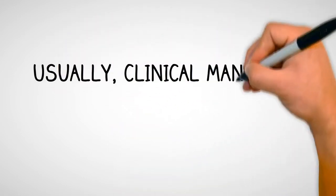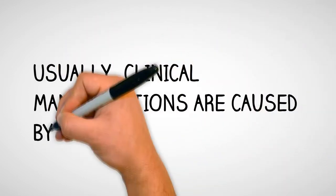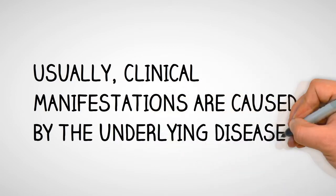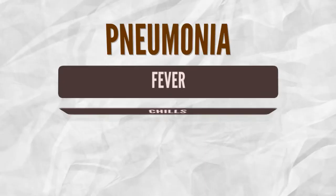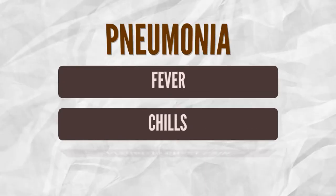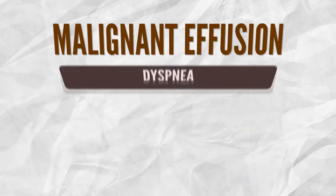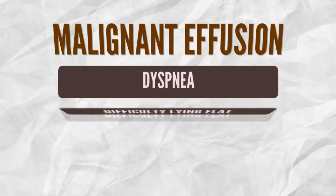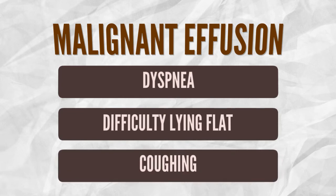Usually, clinical manifestations are caused by the underlying disease. For pneumonia, the person may experience symptoms such as fever, chills, and pleuritic chest pain. Whereas for persons with malignant effusions, they may experience dyspnea, difficulty lying flat, and/or coughing.